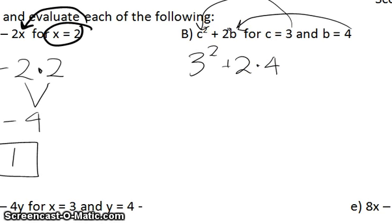So now I'm going to evaluate this using order of operations. Exponents come first. 3 squared means 3 times 3, so that's equal to 9, plus 2 times 4. Order of operations tells me I need to multiply before I add. So I get 9 plus 8, and that gives me 17.